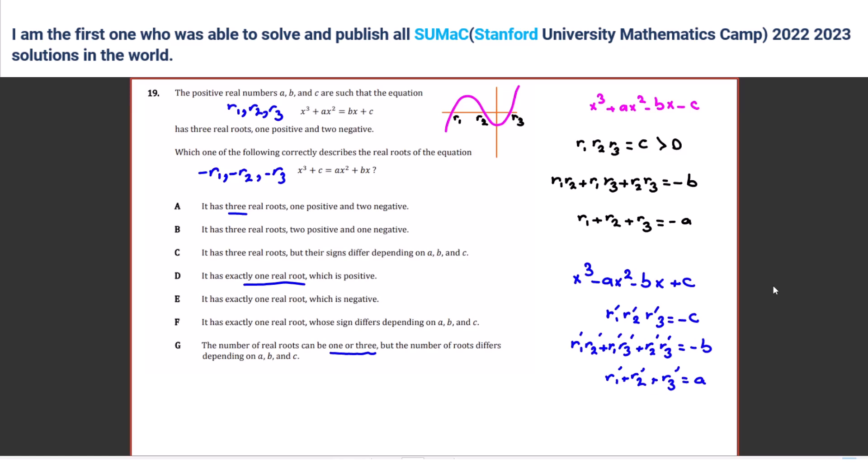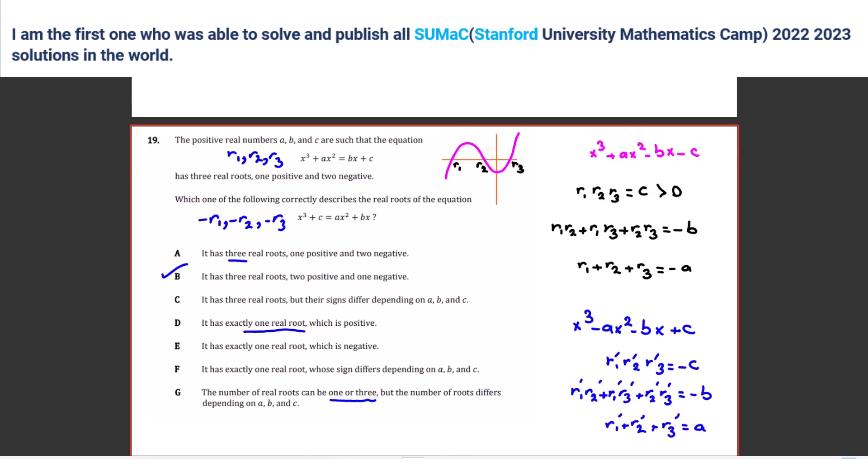Yeah. Okay, so now you can easily say the correct choice is correct. Which choice is correct? We have three real roots, two positive, one negative. Yeah, B. B, finished. Check it. The answer is B. One second. Okay, it is. Well, this is question 19. Yes, B.